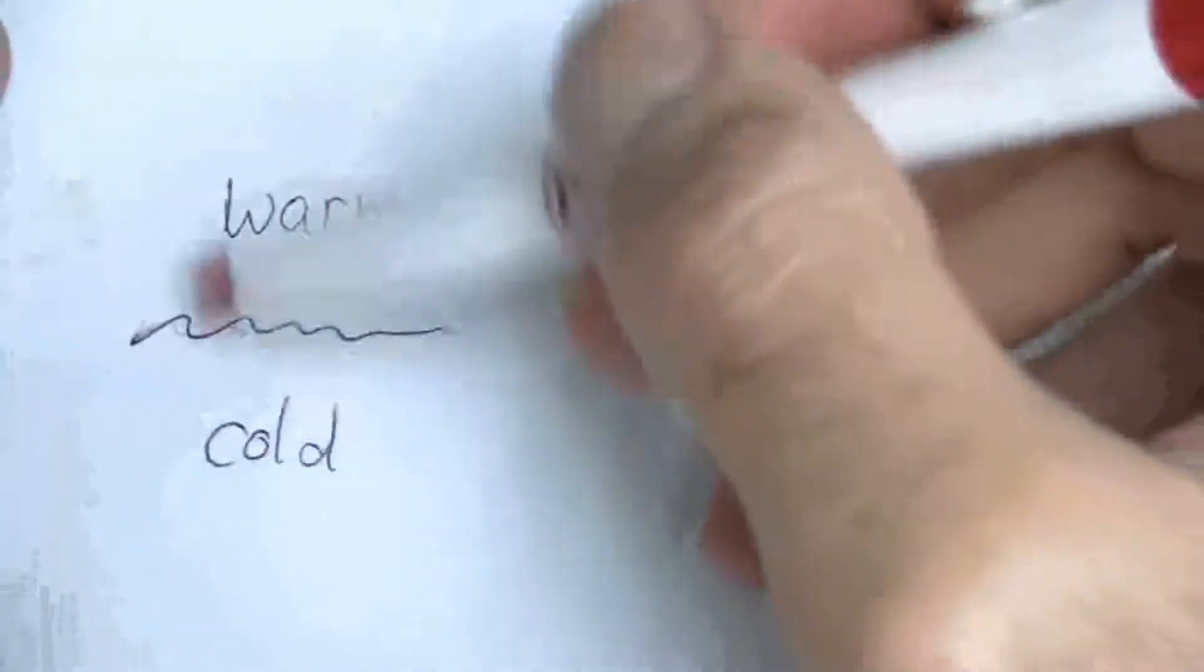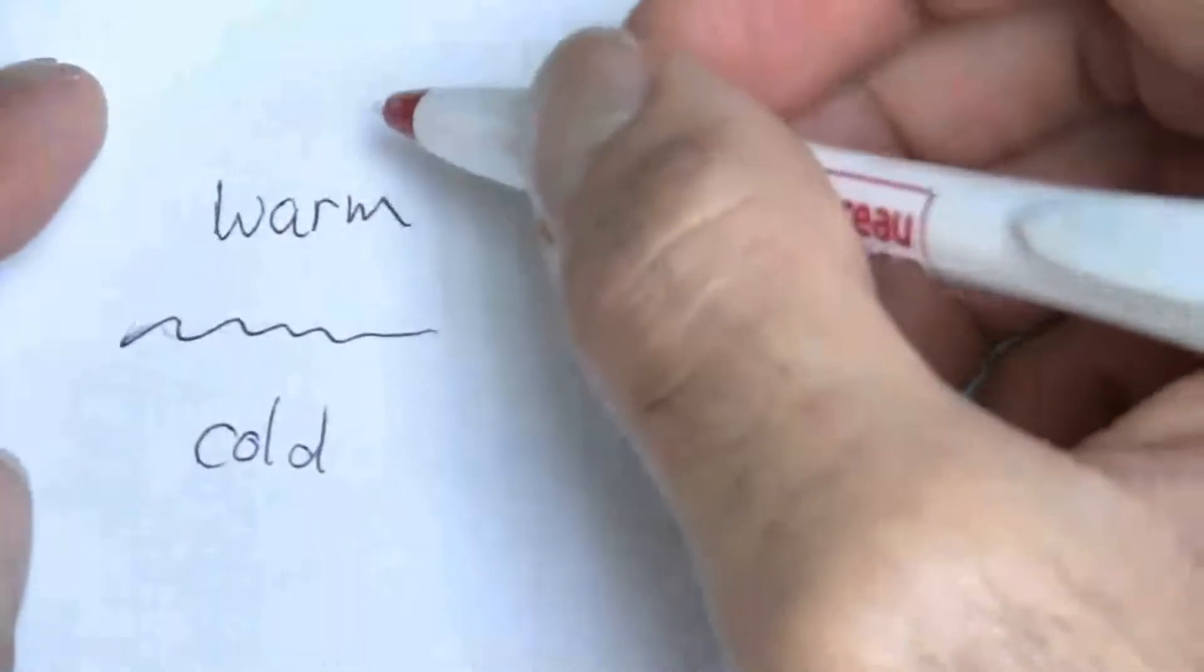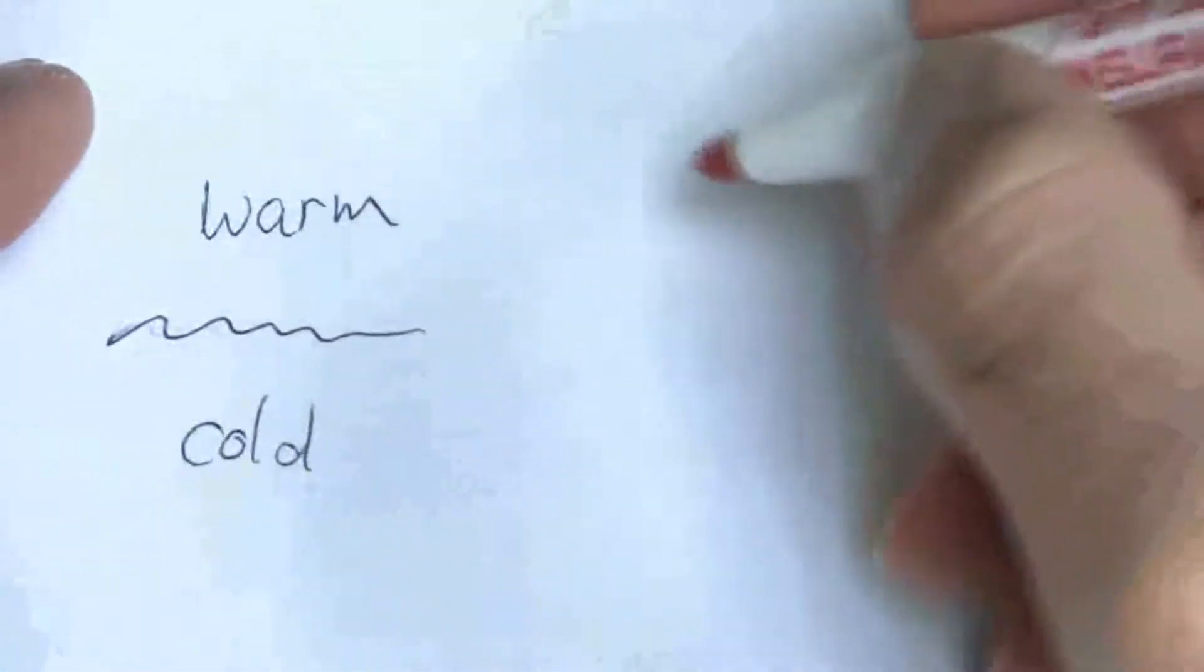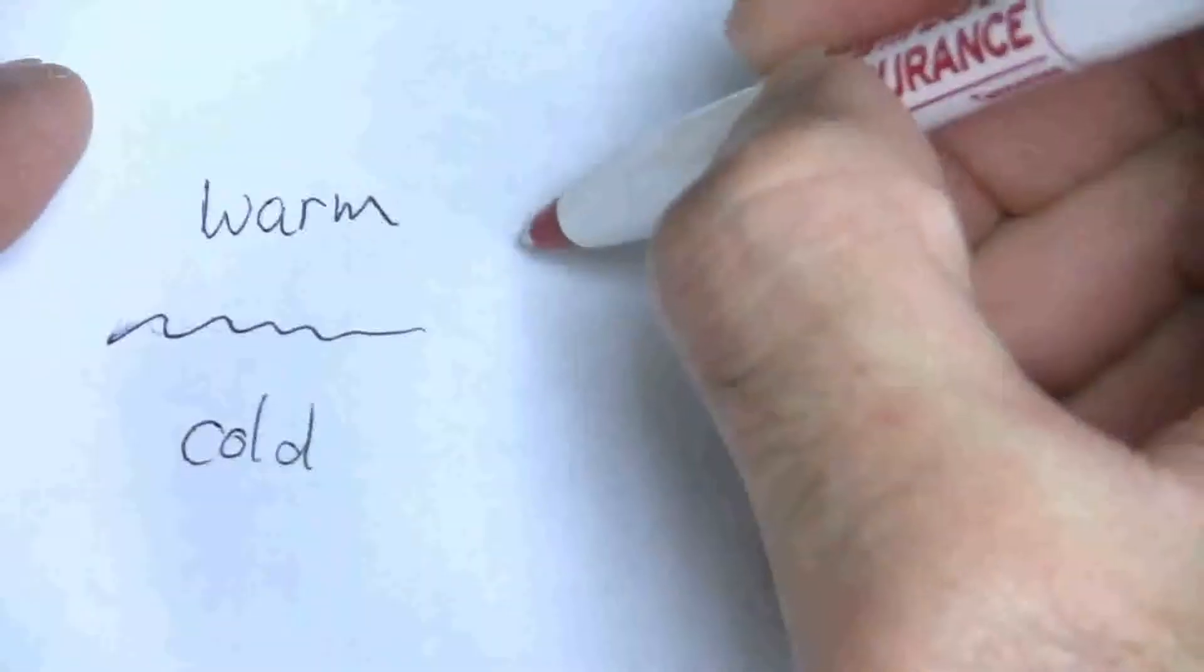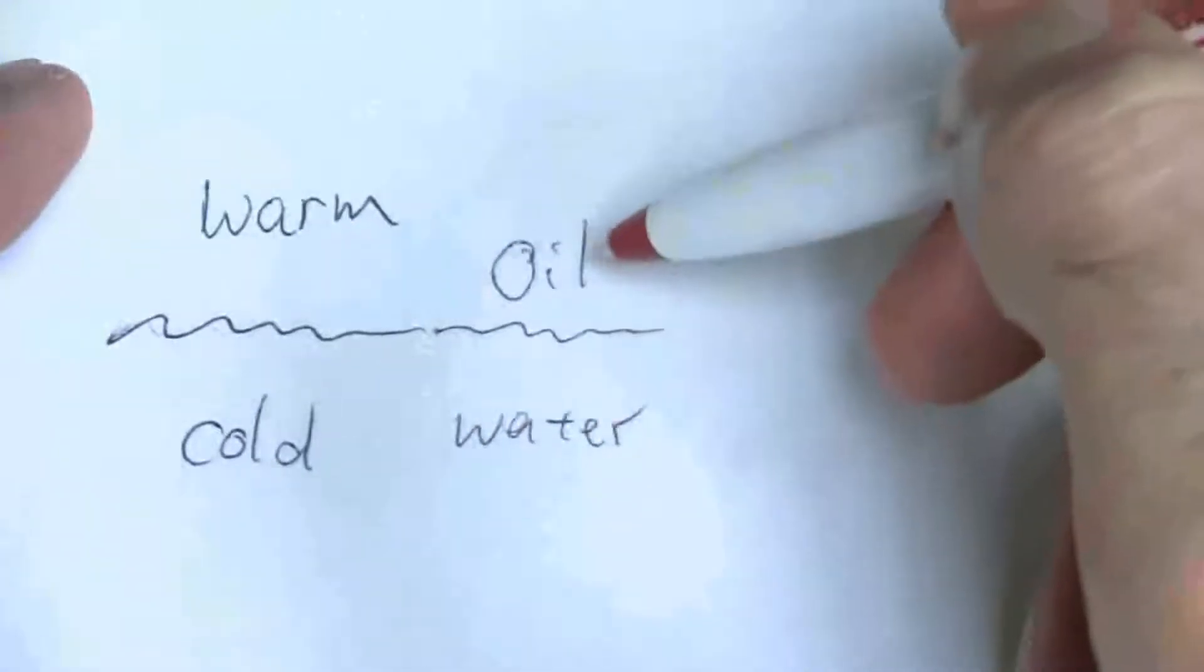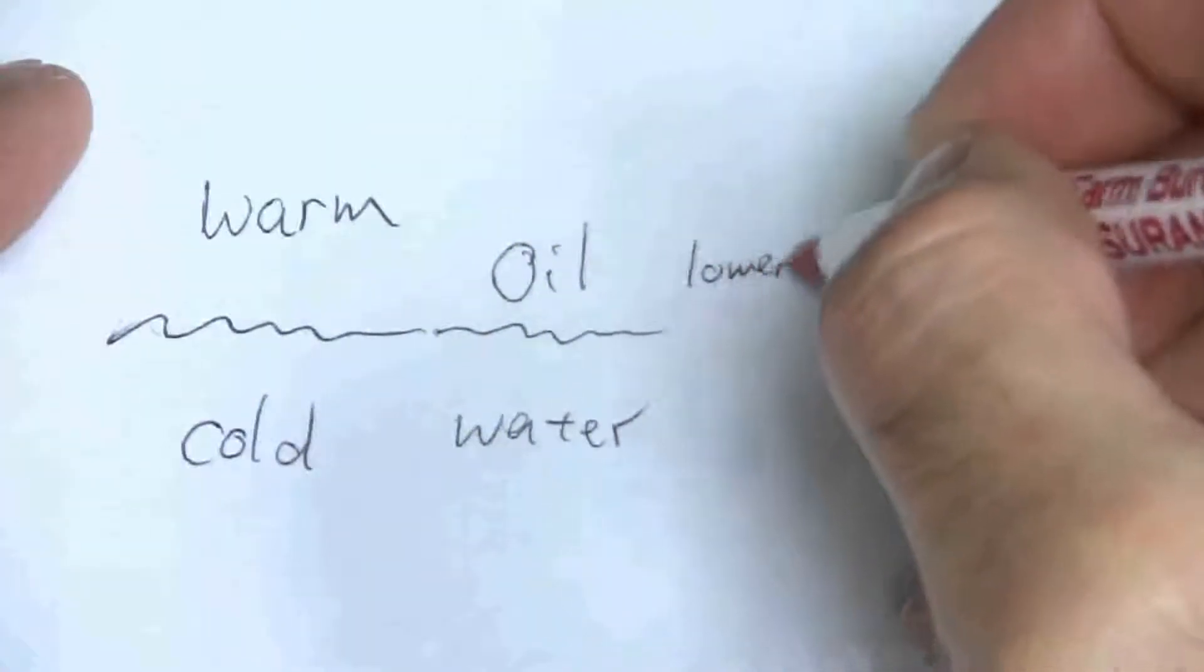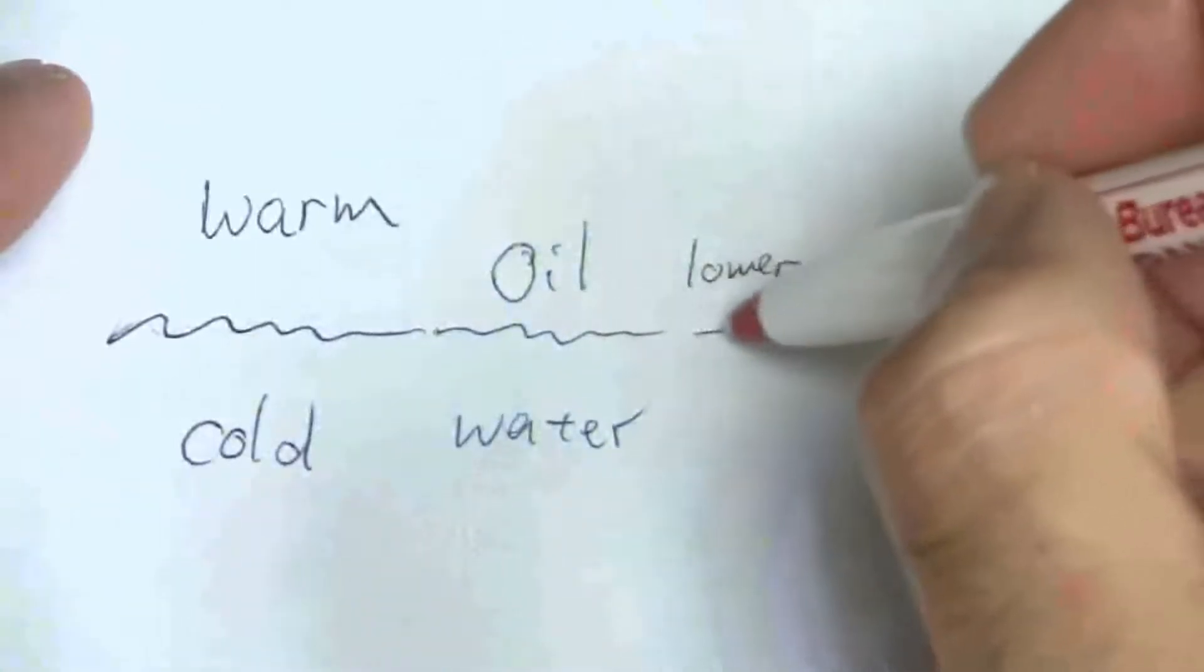Because of the fact that warm air rises above cold air, the reason for that is the same reason that oil floats on water. Why does oil float on water? Because it has a lower density.